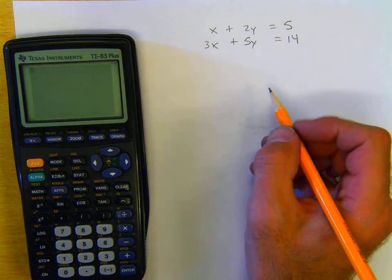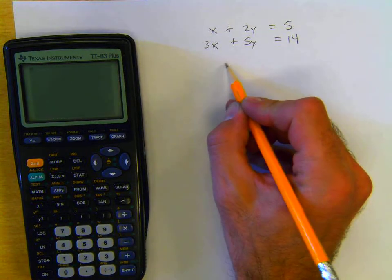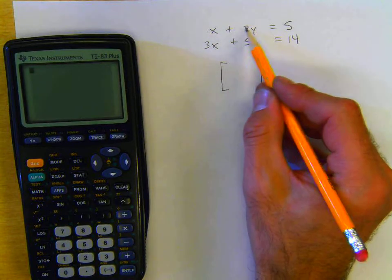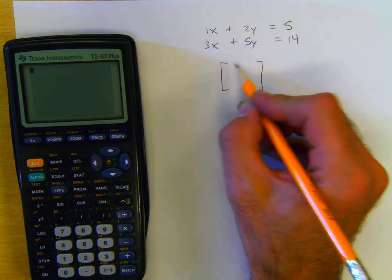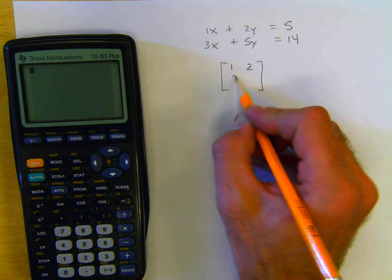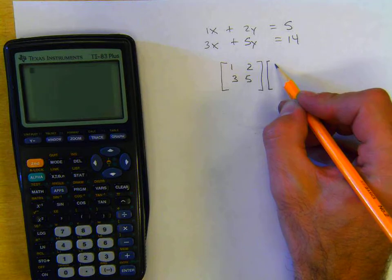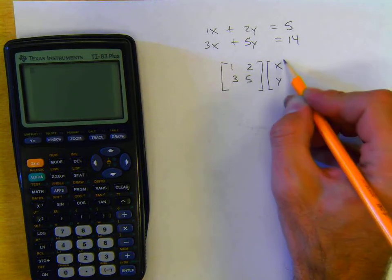The first thing that we want to do is set up a constants matrix. The constants are the numbers in front of the variables. So this would be 1, 2, 3, 5. Then we want to set up a variables matrix. The variables are x and y.